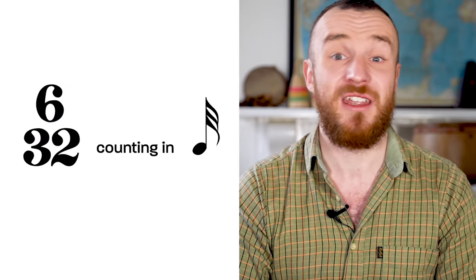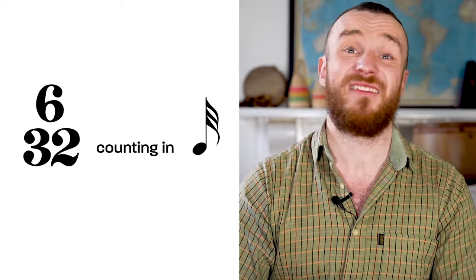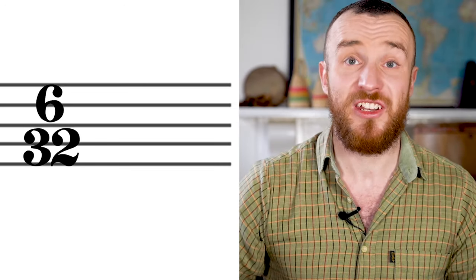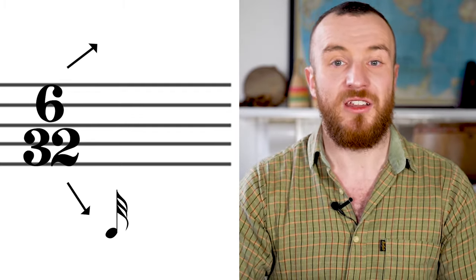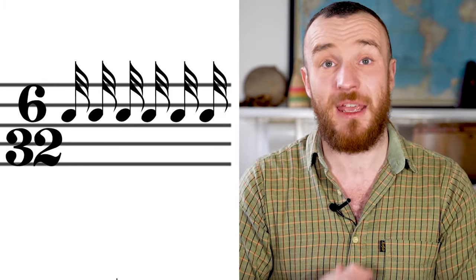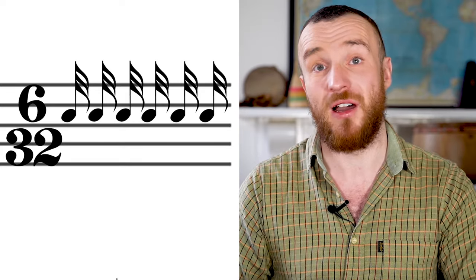There is also one more number which you can technically see on the bottom, which is 32. It shows us that we're counting each beat as demi-semiquavers. So in this bar we have six 32. The 32 in the bottom tells us that we're counting in demi-semiquavers. The top number tells us that there are six beats. So six demi-semiquaver beats in every bar.